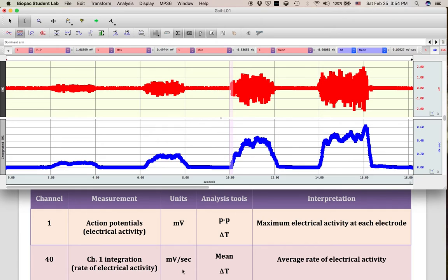Millivolts per second is a rate of how much electrical activity in a given amount of time is occurring. That is your average rate because we are taking the mean here. So what that means is if I highlight this and look at my channel 40 mean,